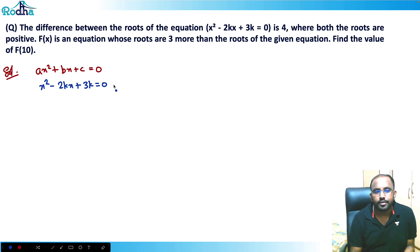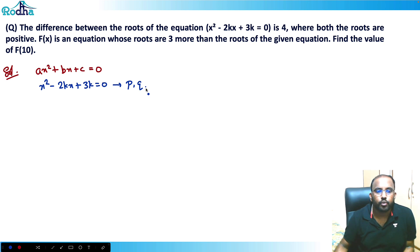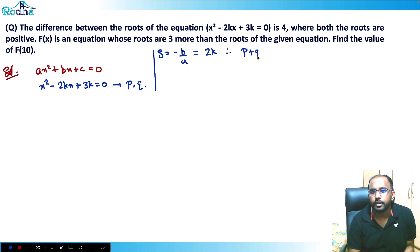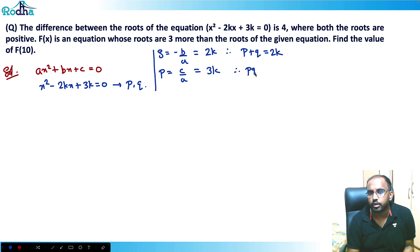Let's assume the roots of the equation are p and q. If p and q are the roots of this equation, then the sum of roots is -b/a, which is -(-2k)/1 = 2k. Therefore p + q = 2k. The product of roots is c/a = 3k/1, therefore p × q = 3k. It's also given that the difference between the roots is 4.